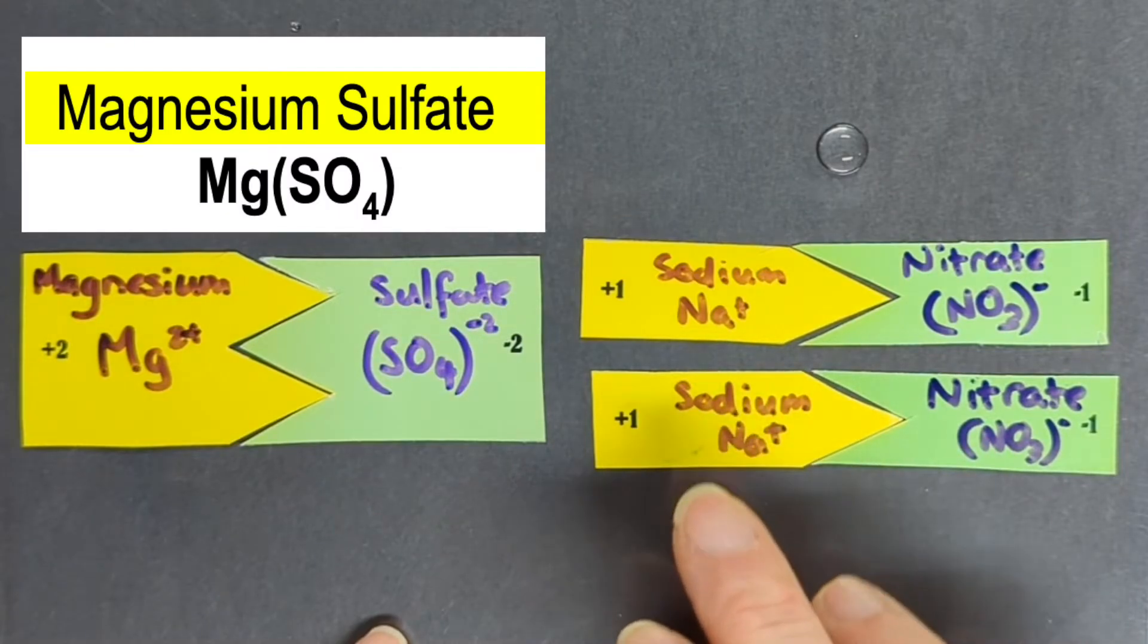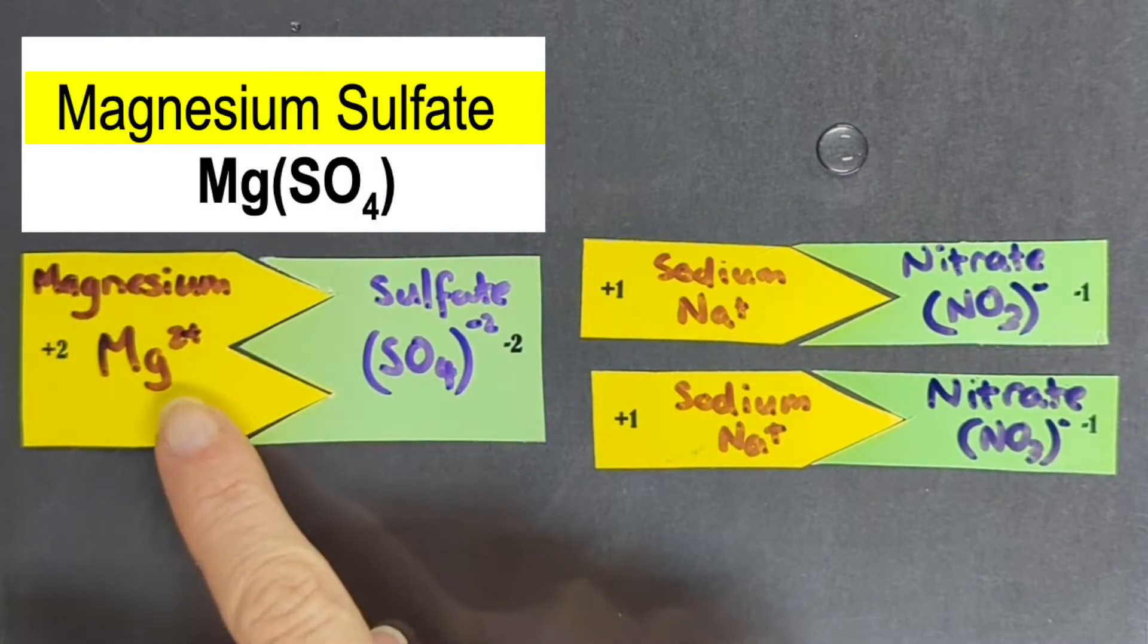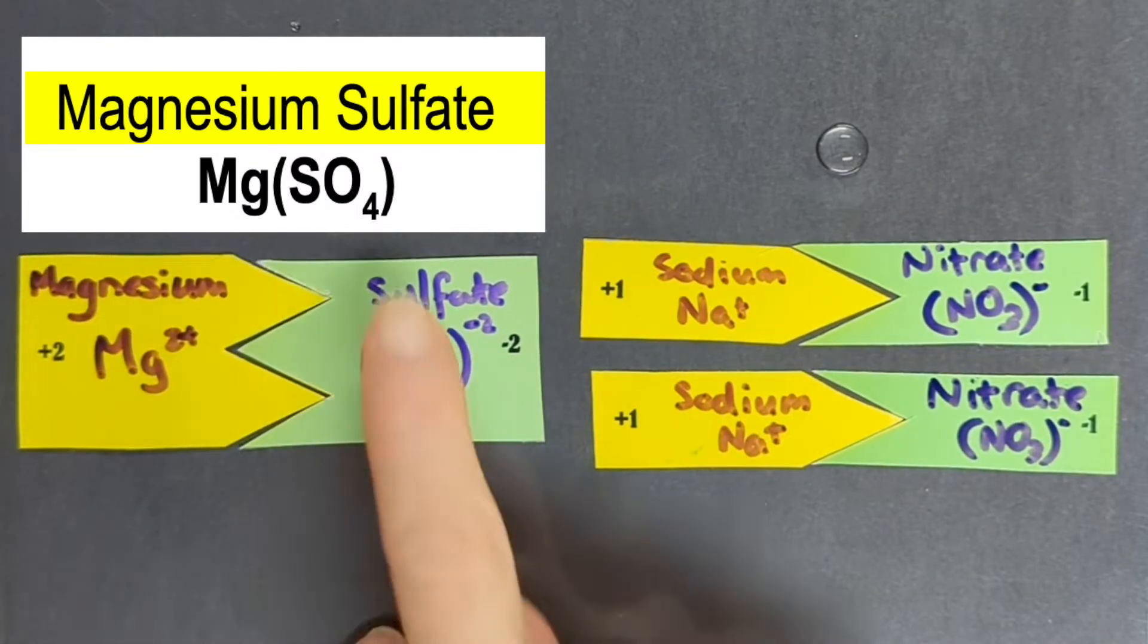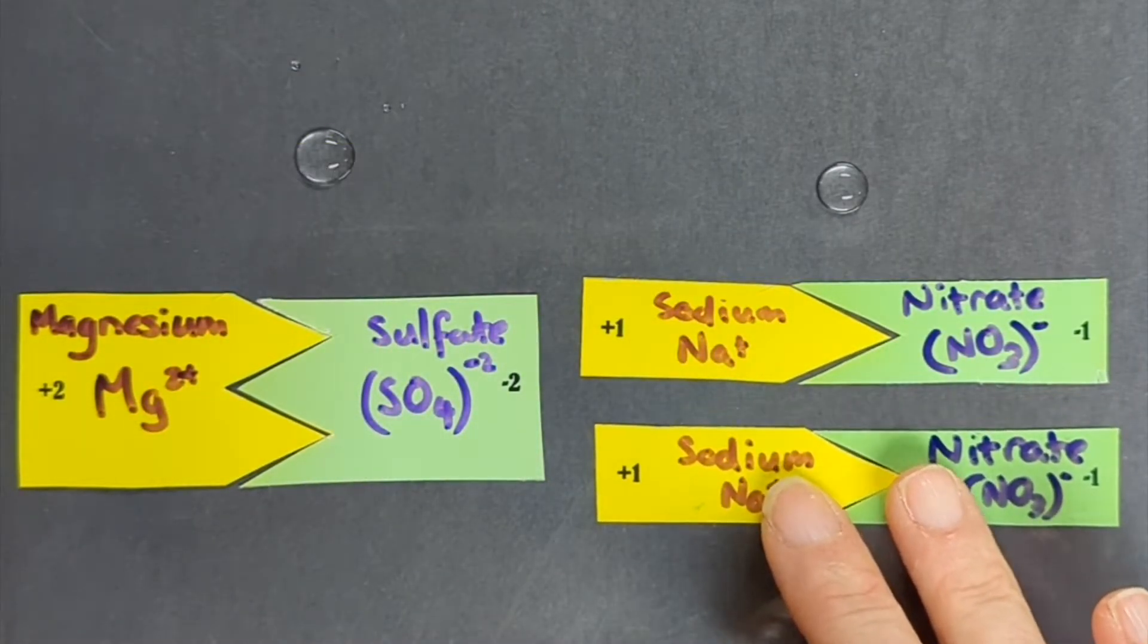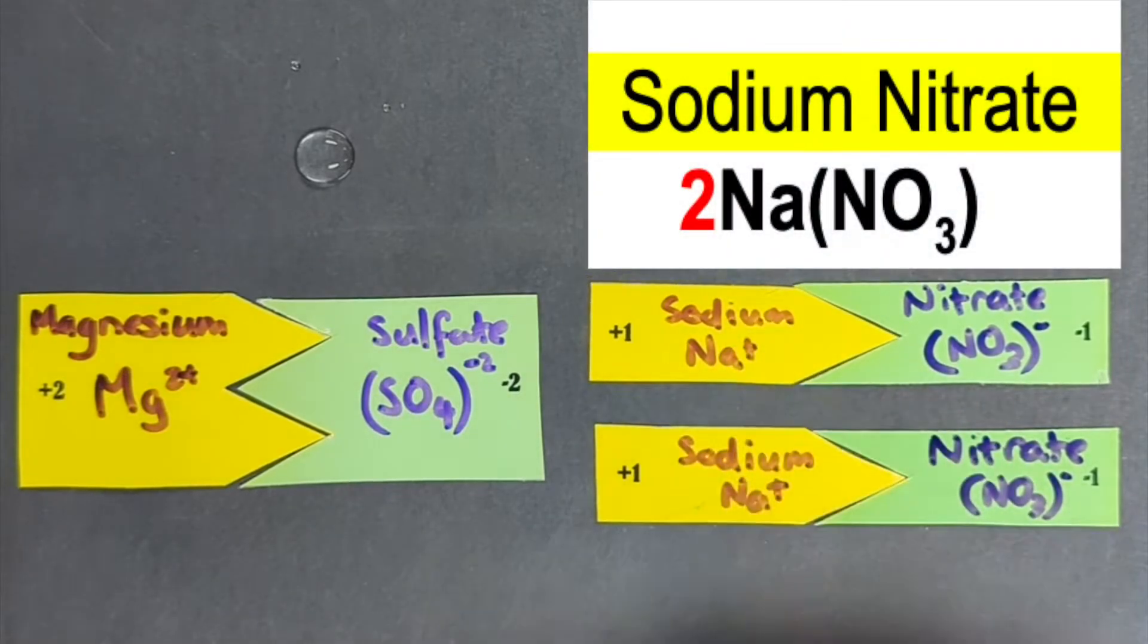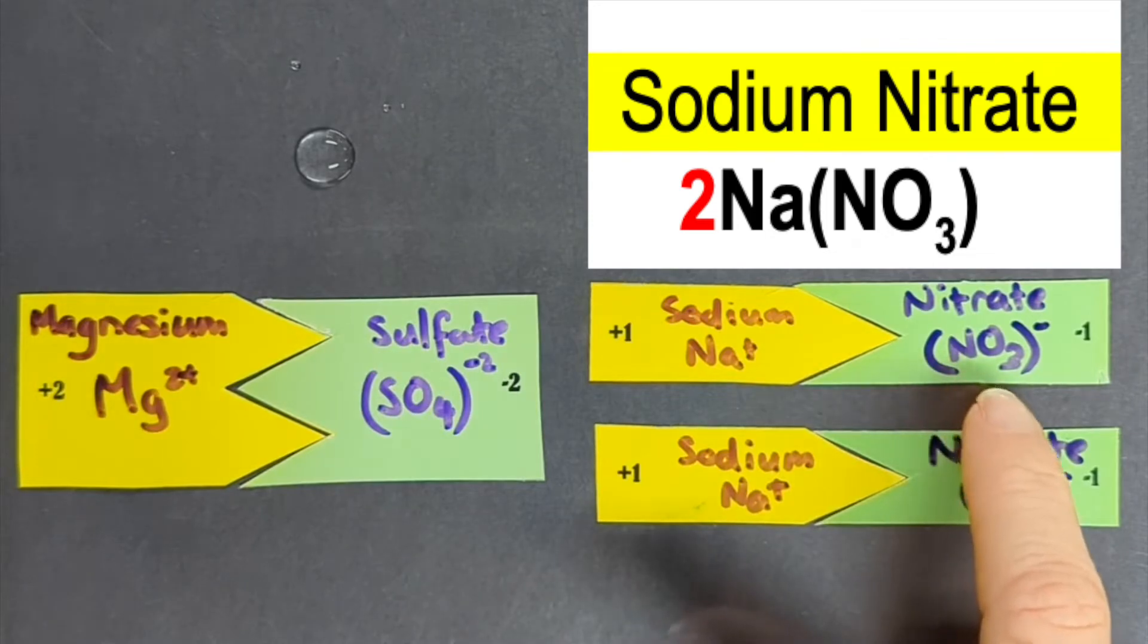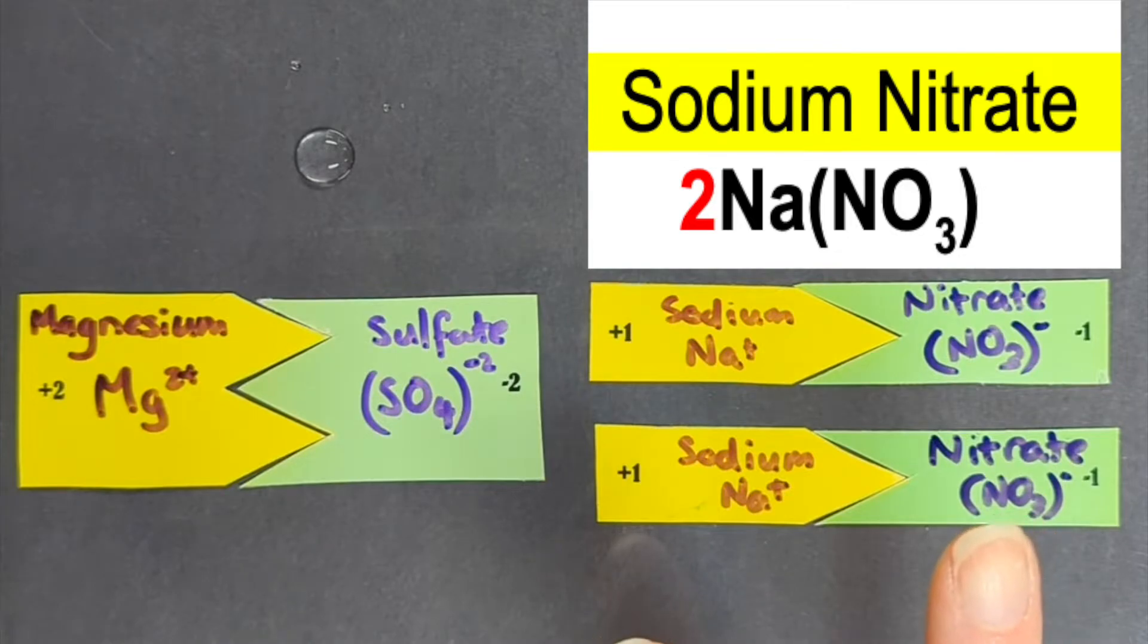However, notice this: we've only got one magnesium, one sulfate here, one compound. But the sodium and the nitrate, we actually have enough to make two pairs of sodium nitrate, because you only need one sodium and one nitrate to form that compound. But I had enough to make two of them.